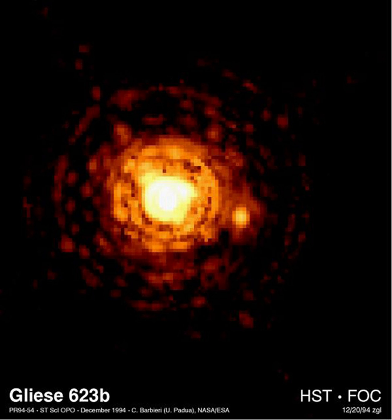A red dwarf is a small and cool star on the main sequence, of M spectral type. Red dwarfs range in mass from about 0.075 to about 0.50 solar mass and have a surface temperature of less than 4000 K. Sometimes K-type main sequence stars, with masses between 0.50 to 0.8 solar mass, are also included.